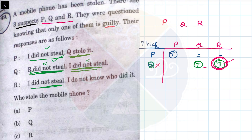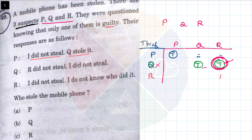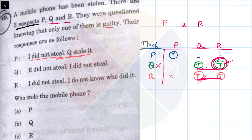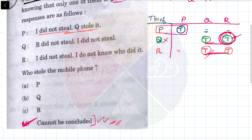Now let's look at the next case where the thief is R — R is lying and everyone else is telling the truth. P says 'I did not steal, Q stole it.' But if R is the thief, P saying 'Q stole it' would make Q a thief too — two thieves again. So this also creates a contradiction. Only when P is the thief does everything match up, which basically means P is the thief.